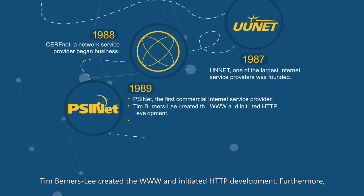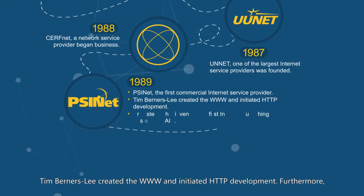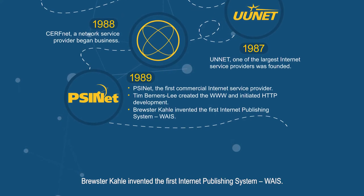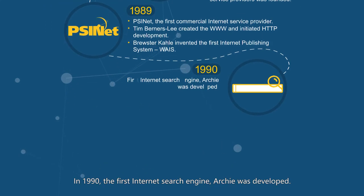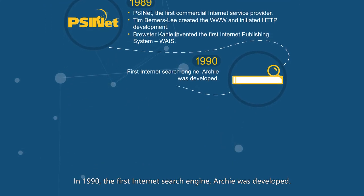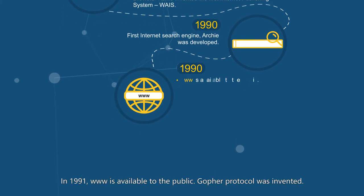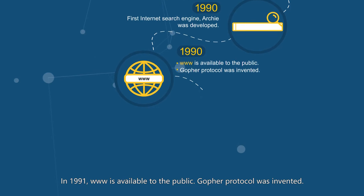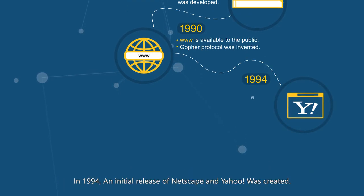In 1989, SUNET, the first commercial internet service provider, was founded. Tim Berners-Lee created the WWW and initiated HTTP development. Furthermore, Brewster Kahle invented the first internet publishing system, WAIS. In 1990, the first internet search engine, Archie, was developed.